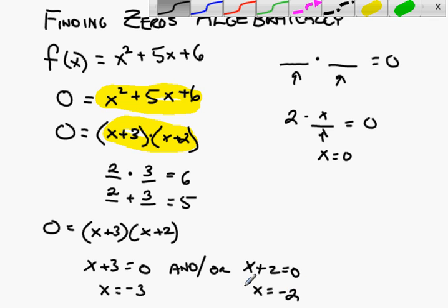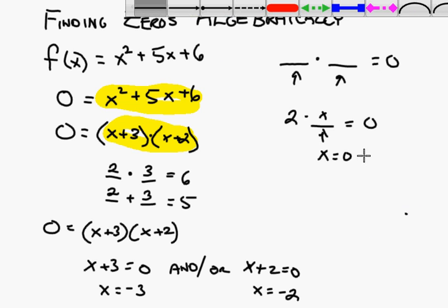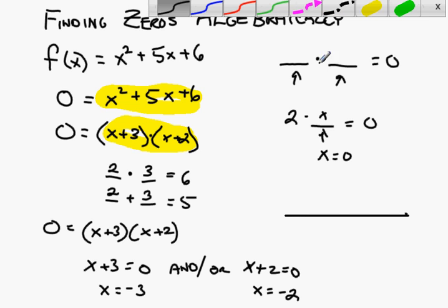We just found the zeros for this particular function. So when you make your parabola, when I draw this parabola, then I know that one of the points is going to be at negative two comma zero, and the other zero is negative three comma zero.